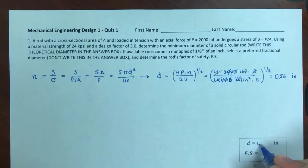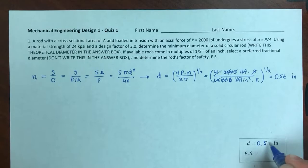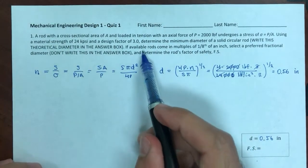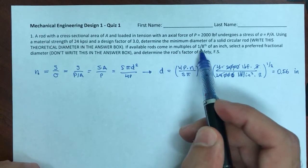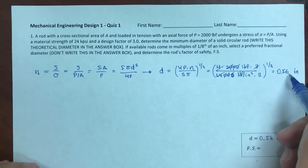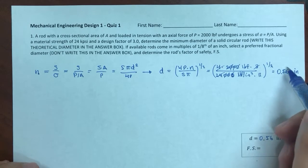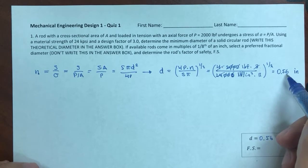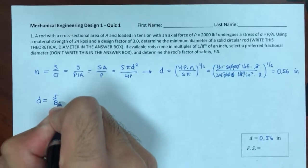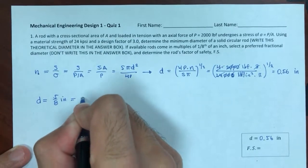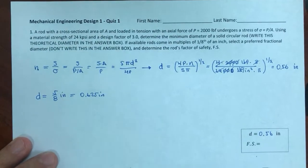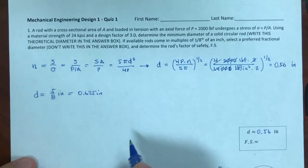So 0.564 inches is my minimum diameter. Now, available rods come in multiples of 1/8 of an inch. This would be closer to 4/8 (one-half inch), but that would not be enough. So I go to 5/8. My diameter is 5/8 of an inch, which is 0.625 inches. Then I do the same calculation for the factor of safety.